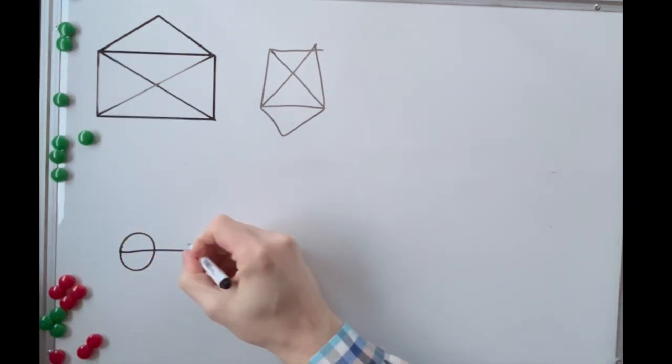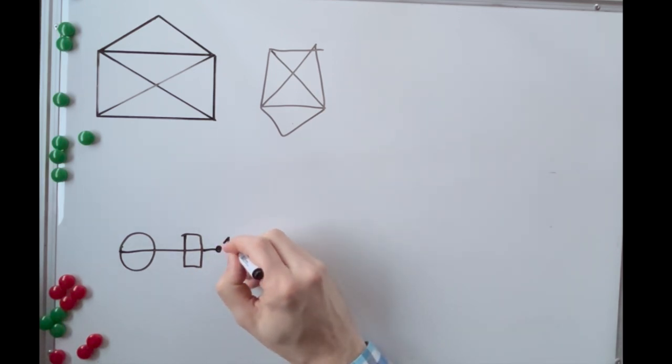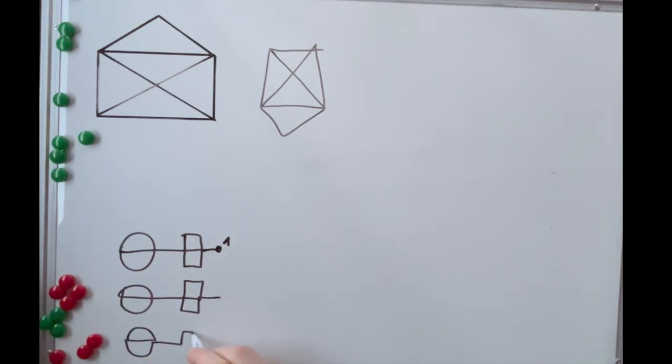Here's another example. A node with a single line also counts as an odd node. You must start or end at this point. Knowing this rule makes drawing such shapes easy and you have to try really hard to get stuck.